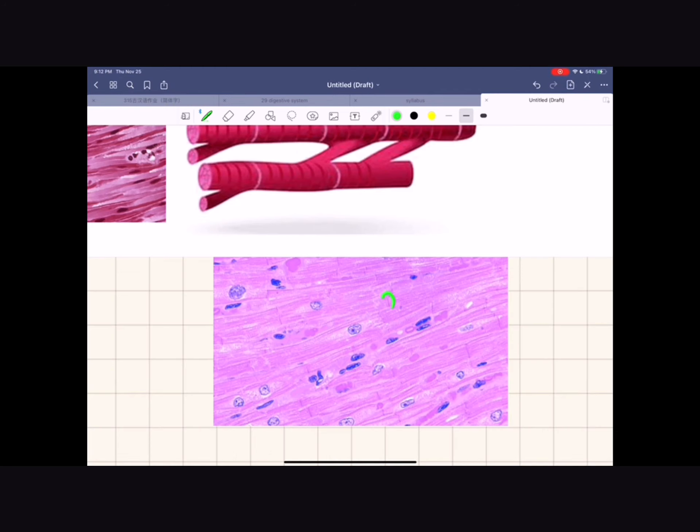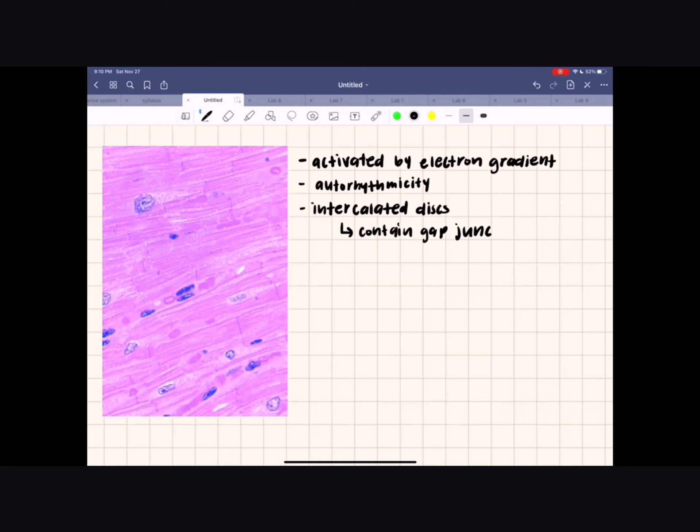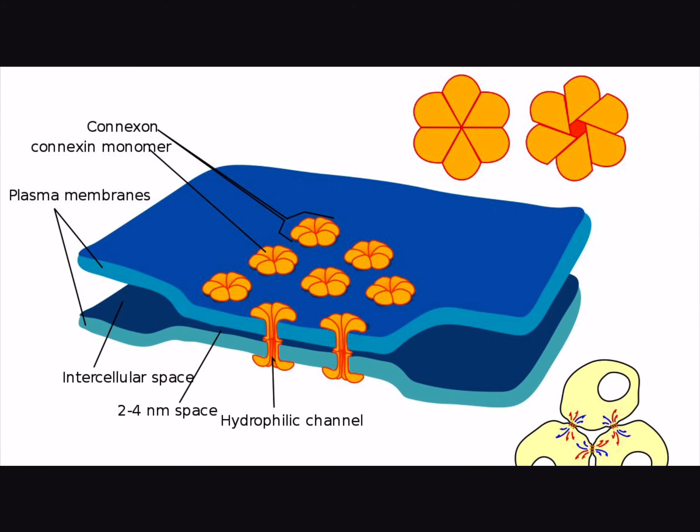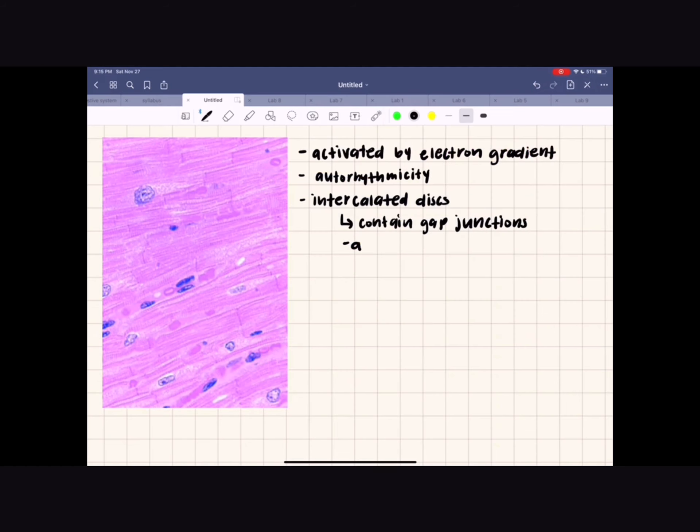Second, cardiac muscle cells are connected by intercalated discs. Intercalated discs contain gap junctions, or tubular channels that connect the cytoplasm of adjoining cells. Therefore, muscle impulses can pass from one cell to the next almost instantly after being created by specialized heart muscle cells.